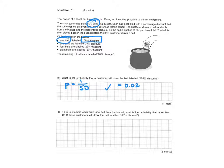Part (b): 500 customers each draw one ball. What is the probability that more than 10 of these customers draw the ball labeled 100% discount? This is a binomial distribution since independence can be assumed — the balls are replaced after each selection. Let X be the number of customers who draw the 100% ball. X ~ Binomial(n=500, p=0.02).